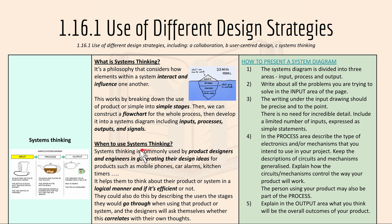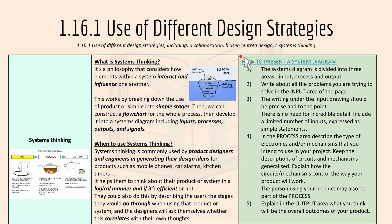System thinking is commonly used by product designers and engineers in generating their design ideas for products like these ones right here. It helps them to think about their product or system in a logical manner and whether it's efficient or not. This is how to present a system diagram, with five steps basically.